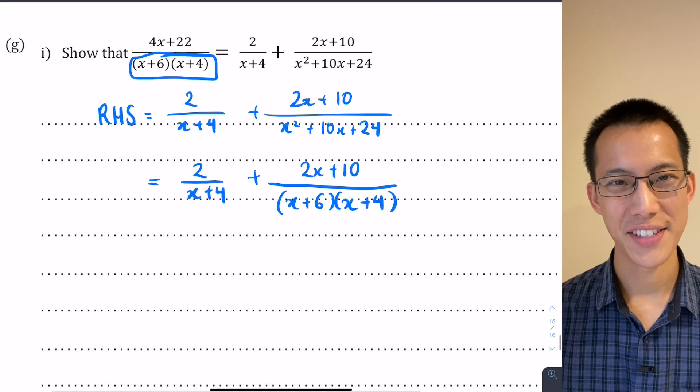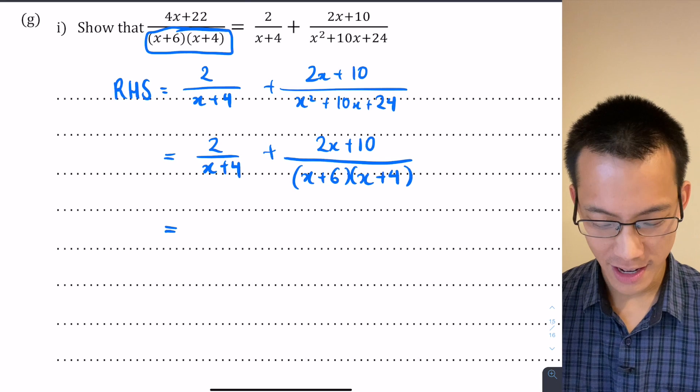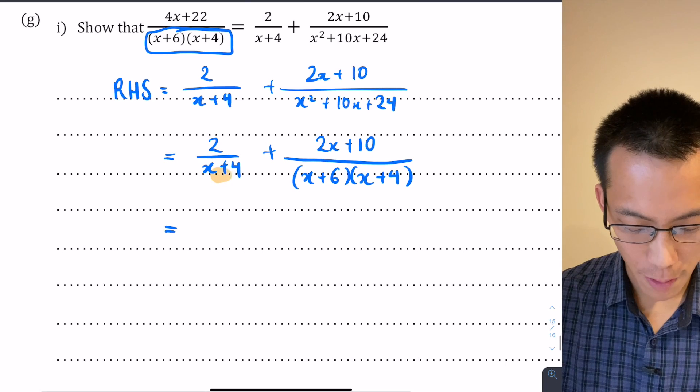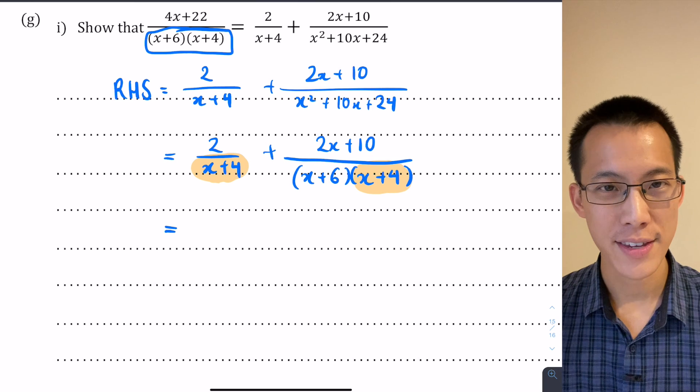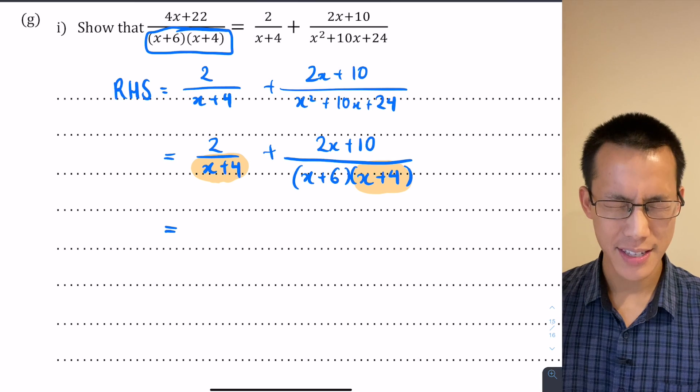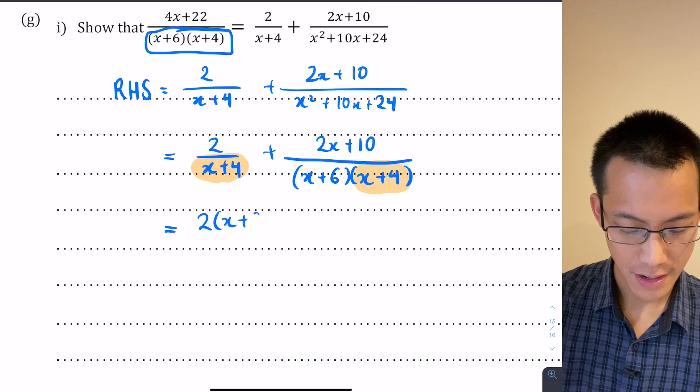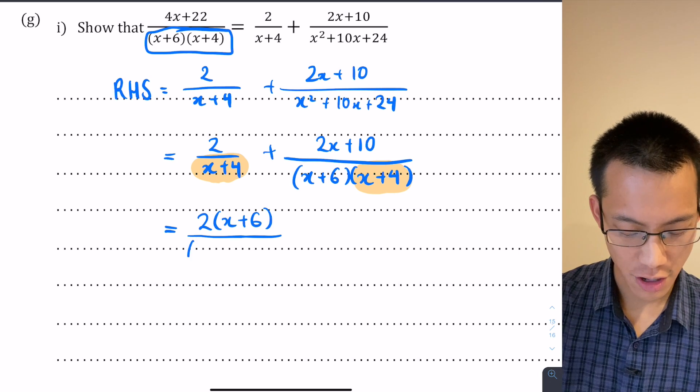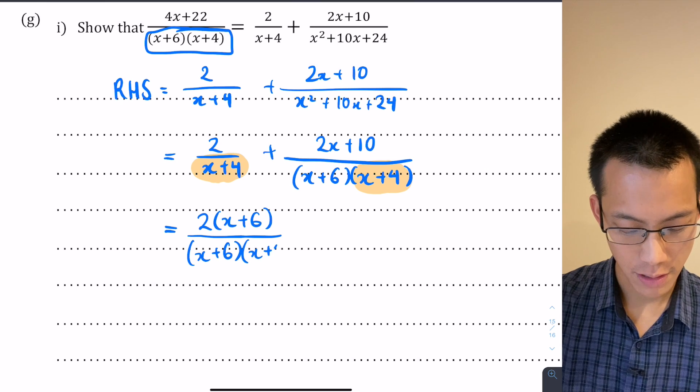Now I've got the factorizing down, that's good. What's left is to combine these two fractions into one. In order to do that, I need a common denominator. Because I've already got this common factor of (x+4), all I need to do is multiply the left hand fraction by (x+6) on (x+6). So if I do that, on the top there's the numerator, here's the denominator (x+6)(x+4).